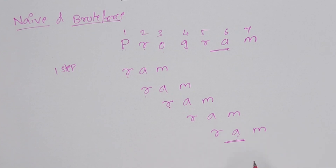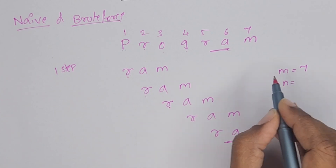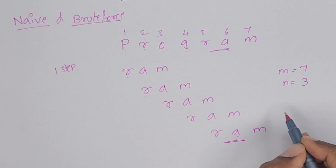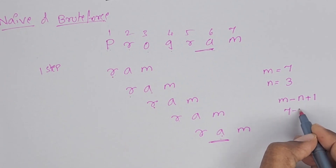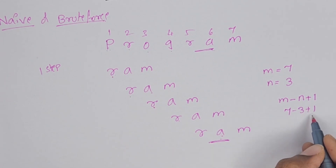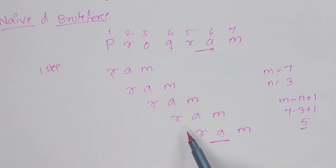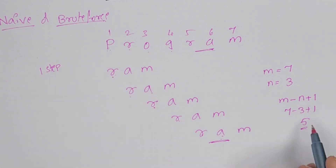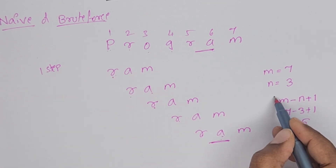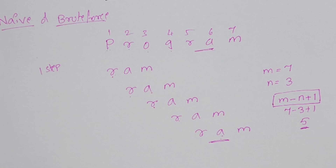Coming to disadvantages: the string length is 7 and pattern length is 3. In the worst case, the number of comparisons is N minus M plus 1 — that is 7 minus 3 plus 1, which is 5. Worst case means if the pattern is present in the last locations. In this example, 5 comparisons are required in the worst case, so it requires N minus M plus 1 comparisons.